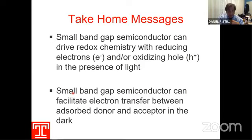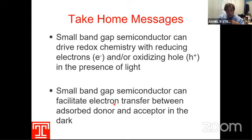The second take-home point concerns reactions in the dark. You need light excitation to drive this kind of chemistry — but what we found in our lab is that the small band gap semiconductor can actually act as a wire, essentially electrically connecting a donor molecule ready to give up an electron to an acceptor molecule ready to accept an electron. The surface provides a pathway by which this electron can flow from the donor to the acceptor. In this case, the donor will be arsenite (arsenic three plus) and the acceptor will be chromium six plus.